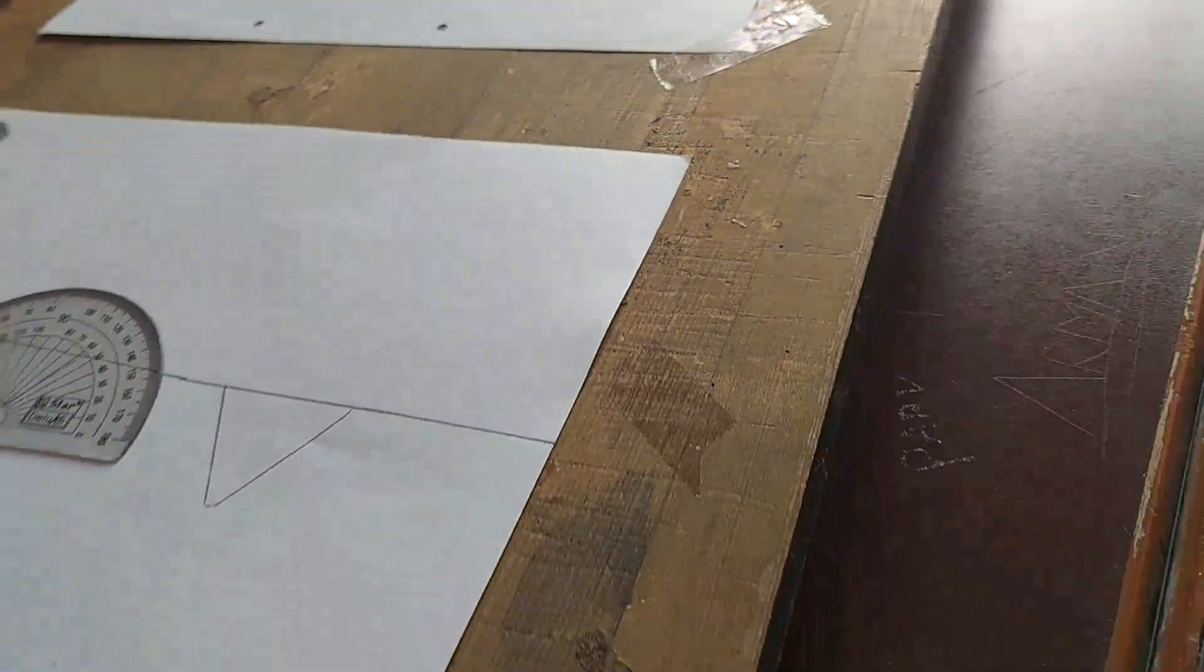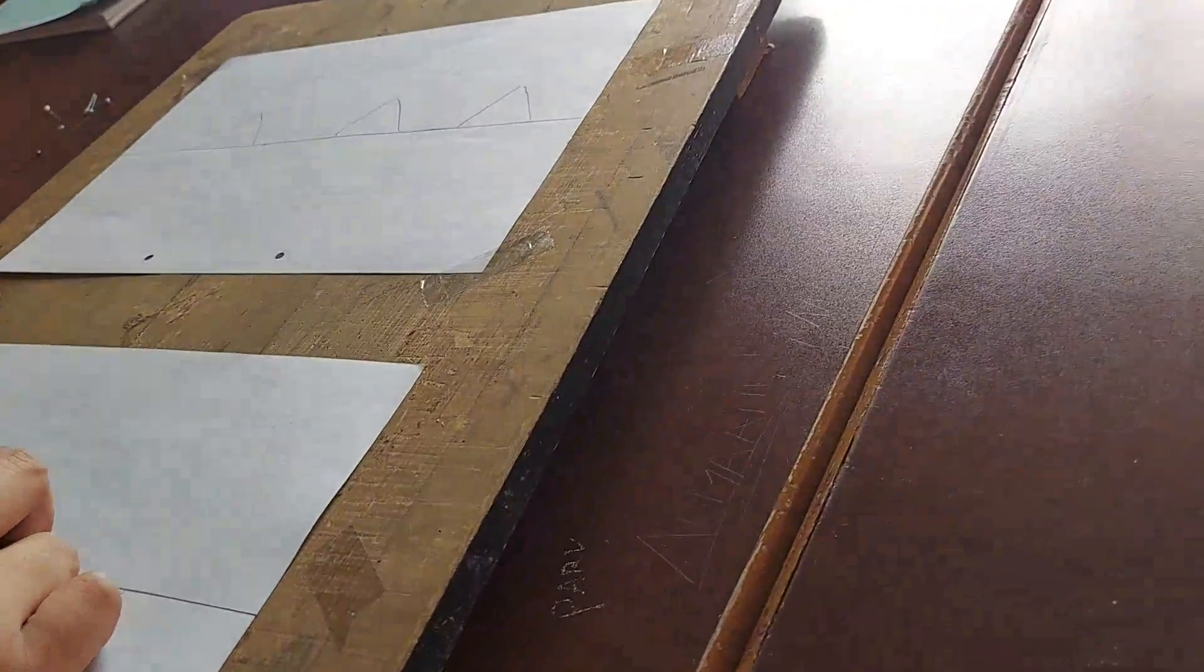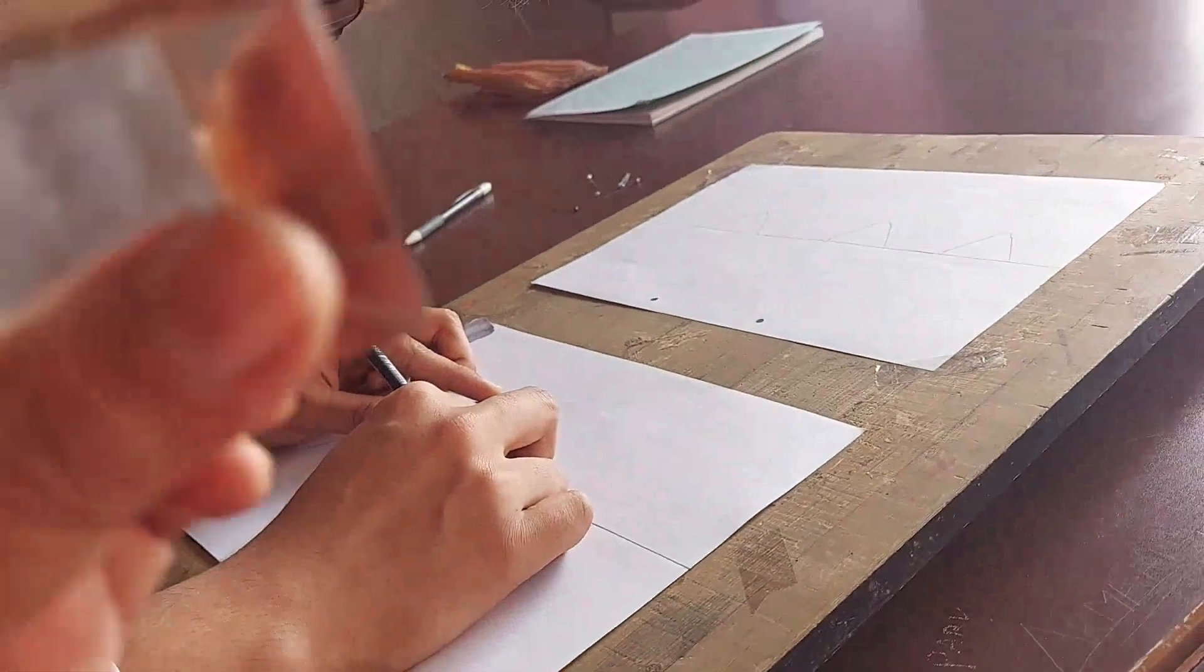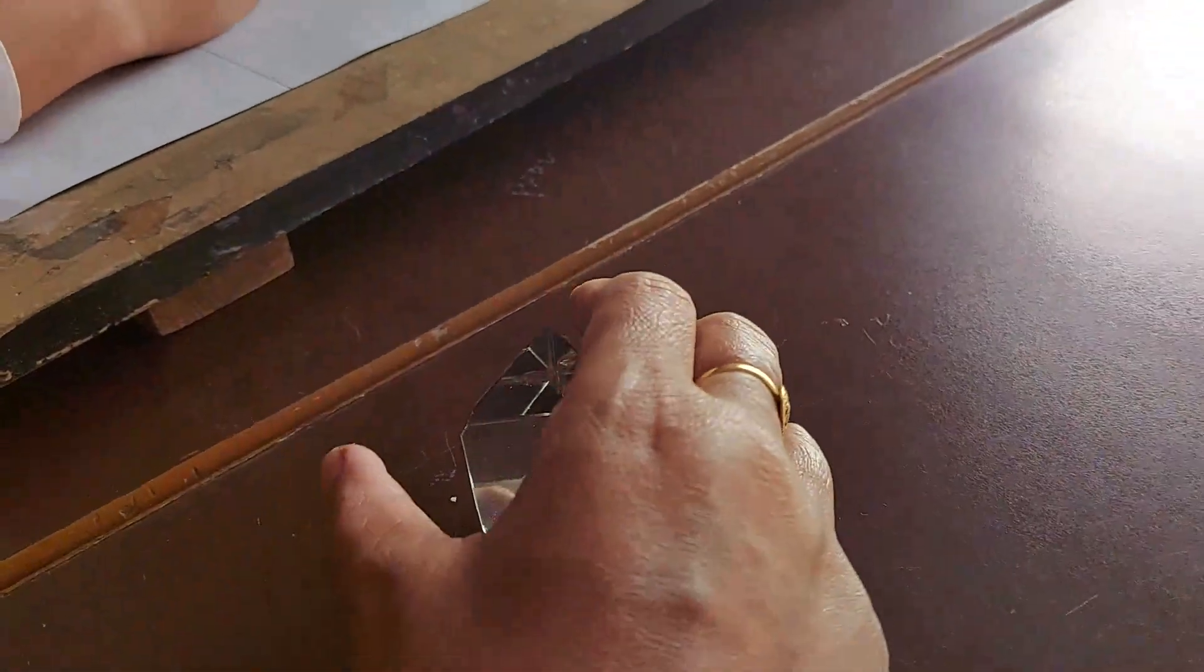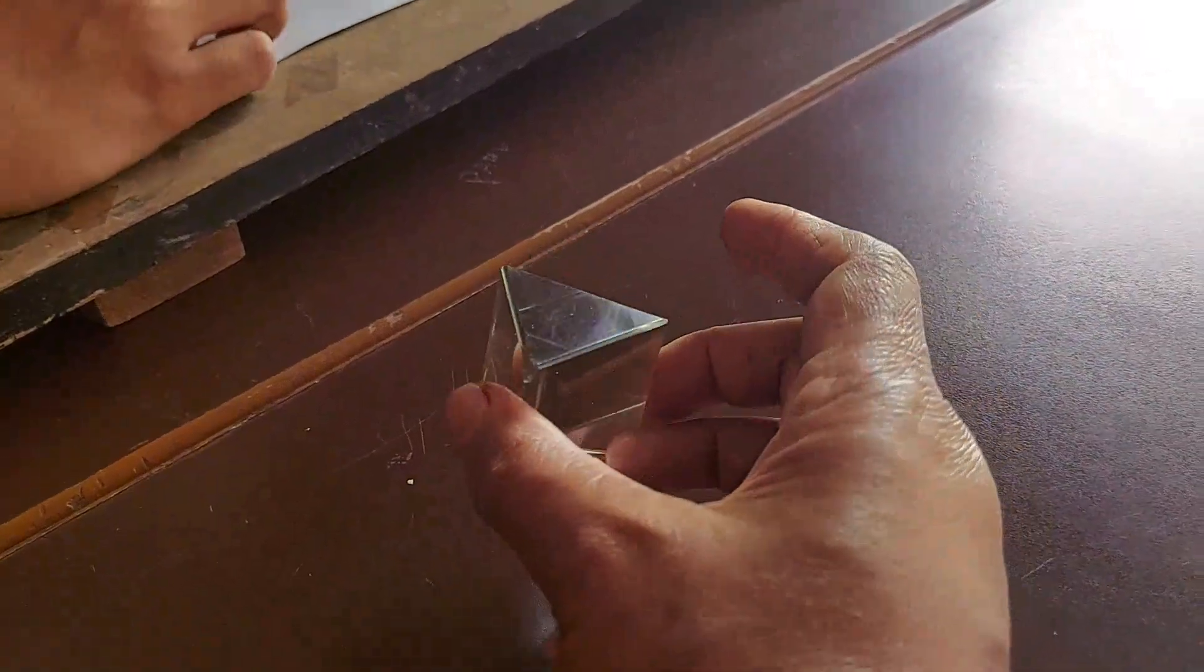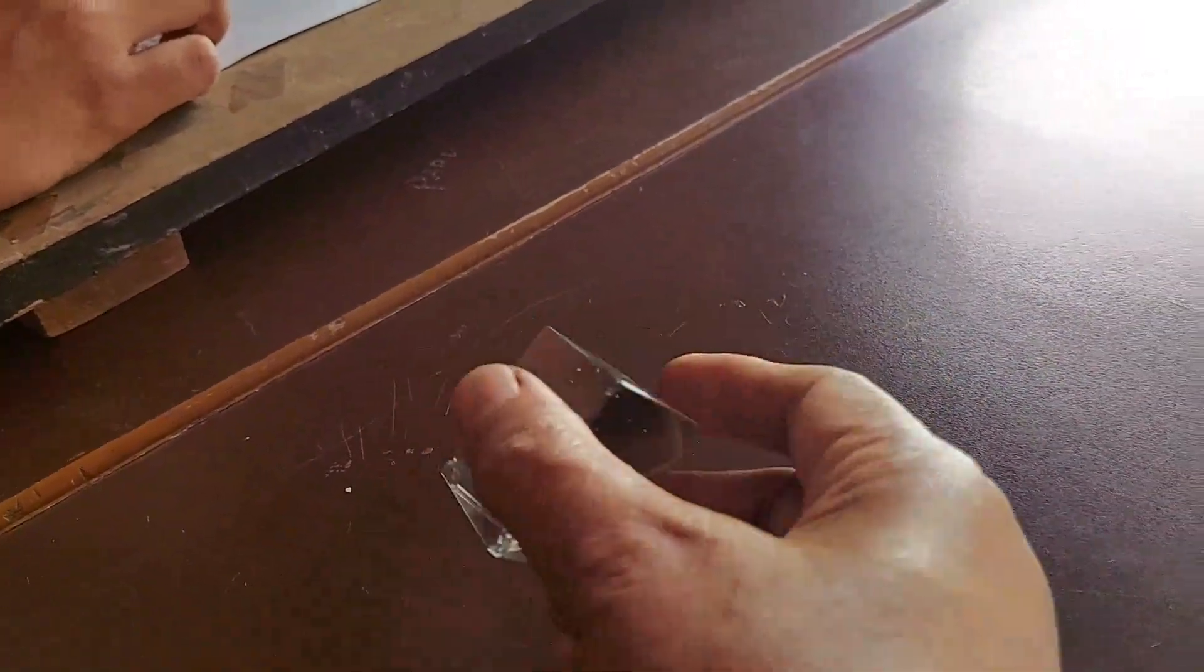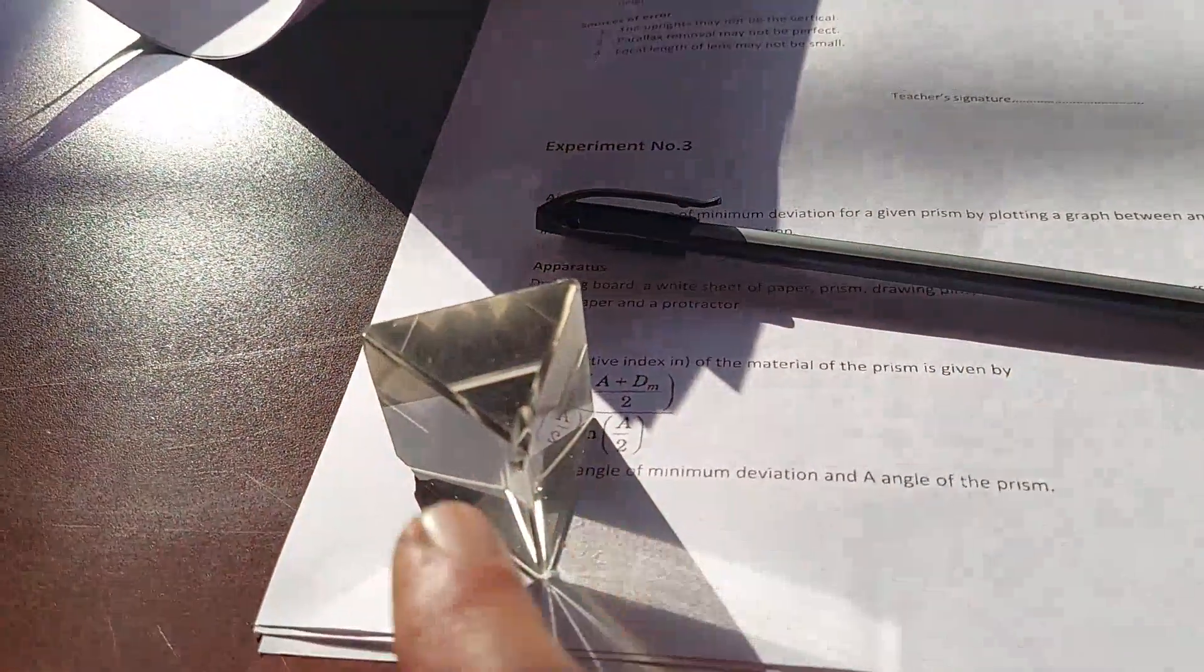Now we will first draw the normals for all 6 diagrams. In the meantime, I can explain about the prism. This is called a prism. We in the lab are using an equilateral prism. Equilateral means all the angles in this are 60 degrees each.